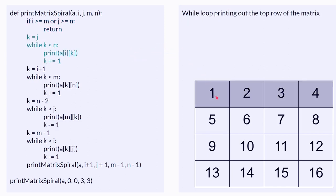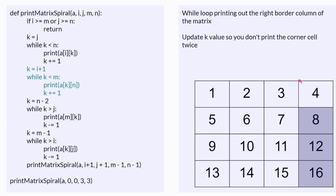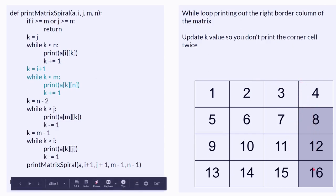So, you have a while loop that prints all of the numbers on the top row of the matrix. Then you have a while loop printing all the ones on the right row of the matrix.